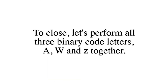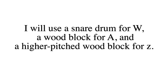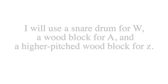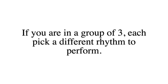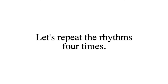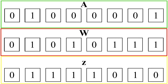To close out our video, let's combine all three letters — A, W, and lowercase z — in binary code rhythm. I will use a snare drum for the letter W, a wood block for the letter A, and an even higher pitched wood block for the lowercase z. If you are in a group of three, each pick a different part to perform. Let's repeat the rhythms four times. 1, 2, 1, 2, ready, and.